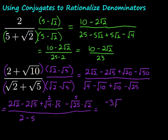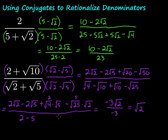So we have minus 3 square root of 2 over negative 3. We can simplify those, and we're left with just the square root of 2. That's way nicer than that crazy original expression.